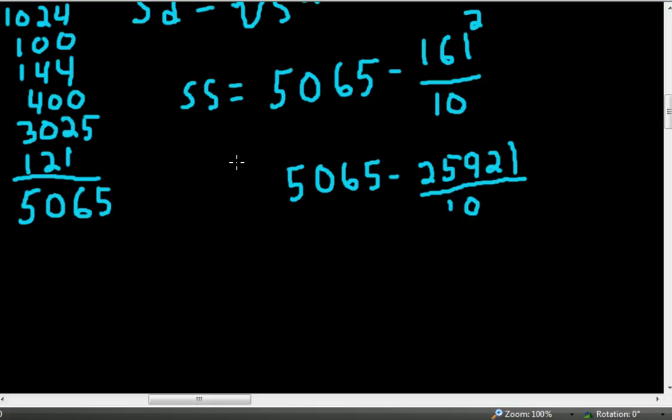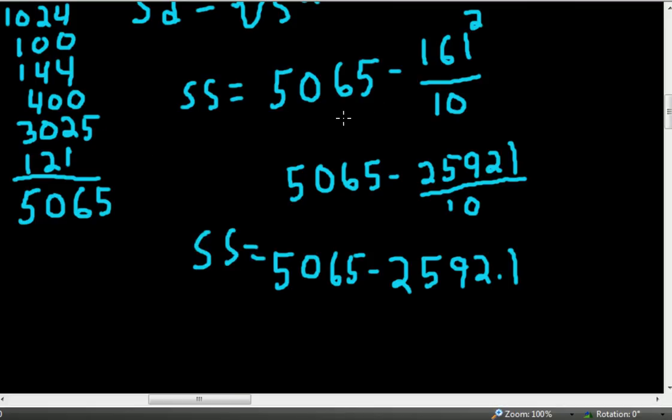So on the right-hand side we have 2592.1. And on the left-hand side we have 5065. And we subtract. And we have for the sum of squares 2472.9.